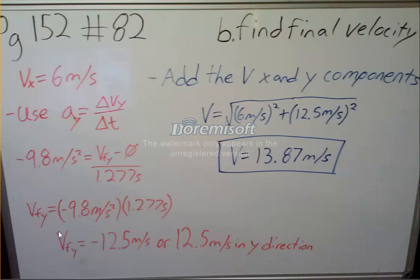So when we solve for v_f we end up getting 12.5 meters per second in the y direction. So we can just add the two x and y components, square root them, and we get v equals 13.87 meters per second.